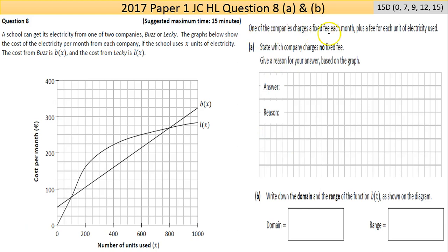One of the company's charges a fixed fee each month plus a fee for each unit of the electricity used. Now that's the Buzz company, because they start at any, you're basically paying 50 euros per month even if you didn't turn the lights on at all.